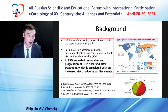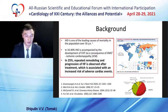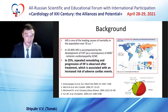Moreover, up to 50 percent of ischemic heart disease cases progress into chronic heart failure. When heart failure develops on the background of obstructive coronary artery disease and is accompanied by severe systolic dysfunction, it is called ischemic cardiomyopathy.